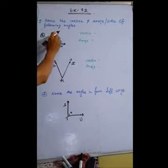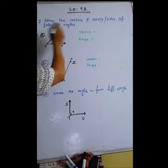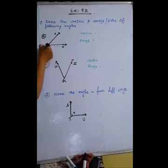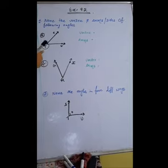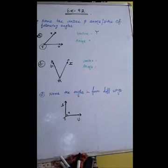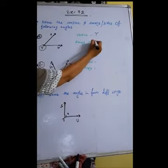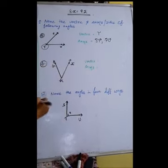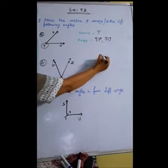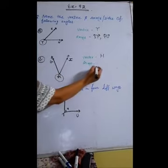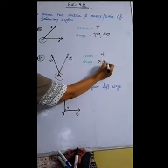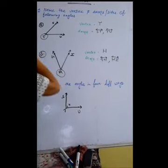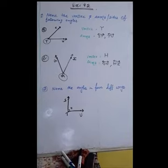Question from your exercise 9.2: Name the vertex and arms or side of the following angles. We have to tell the vertex and arms. Vertex is the common point which is T. So, vertex is T. And arms are ST and TQ. The next question also: vertex is the common point which is H, and arms are GH and HI. So, in this way you have to tell the vertex and arms.